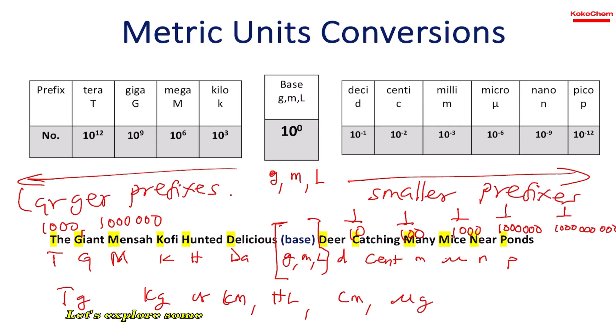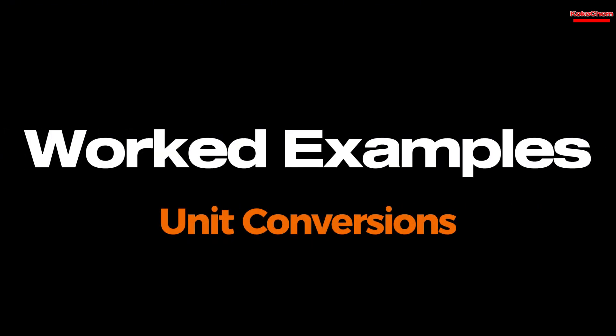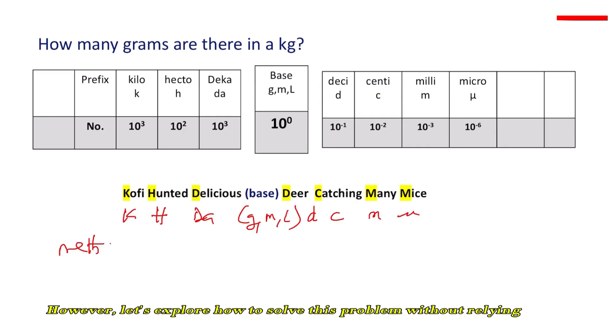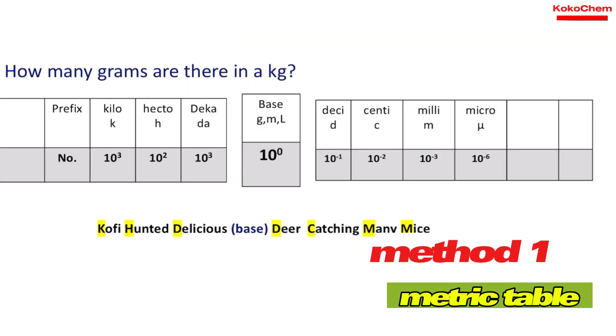For example, when you use the metric system for unit conversion. How many grams are there in a kilogram? You might say one kilogram is 1000 grams, which is excellent. But without memorizing, for any question, you can use the metric method and the formula.